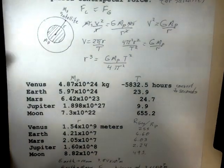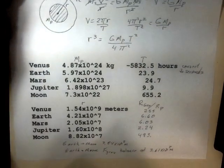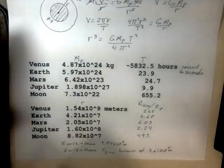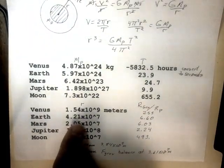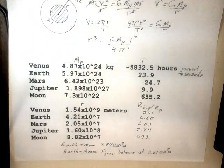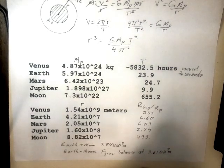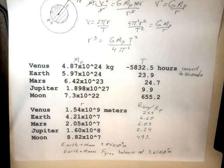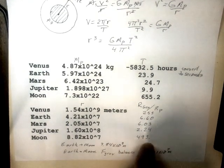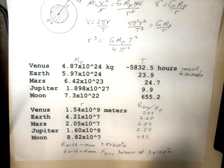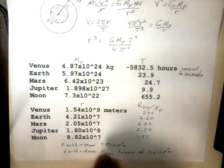For the case of the earth, from the center of the earth out to where the satellite would be is 4.21 times 10 to the seventh meters, that's 6.6 times the radius of the earth. Mars is 6.03 times the radius of Mars, Jupiter 2.24 times the radius of Jupiter, and for the moon, 493 times the radius of the moon.